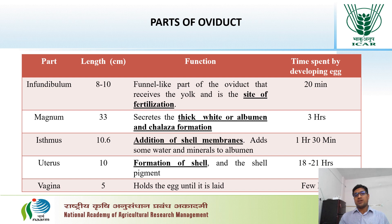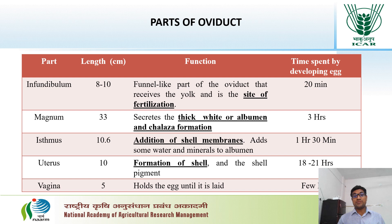The next portion is the uterus, also known as the shell gland, where the major function is the formation of the shell and the pigments. It is around 10 cm in length and the developing egg stays around 18 to 21 hours in the uterus.